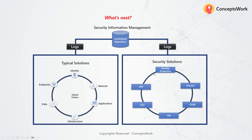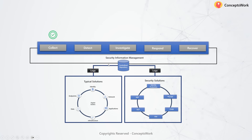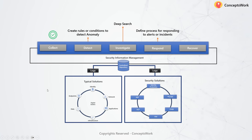Once you have collected all the data, you will go ahead and create rules or conditions to detect anomalies. Once any anomaly is detected, you will perform deep search — meaning you interact with the captured data, write queries, and query the data. Then, if there is a process to follow for responding, you should go ahead and follow that process — basically, you should define a process for responding to alerts and incidents, and lastly initiate the recovery process.